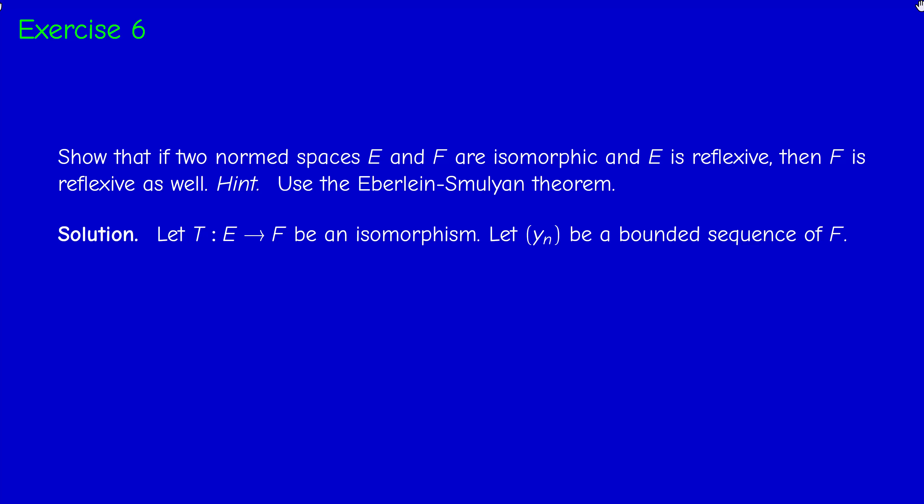Assume E is reflexive. To prove that F is reflexive, we use one of the characterizations of reflexivity. We have the Kakutani theorem (closed unit ball is weakly compact), Eberlein-Smulian (weakly sequentially compact), and the equivalent characterization that every bounded sequence of the space has a weakly convergent subsequence.